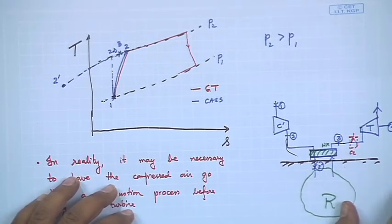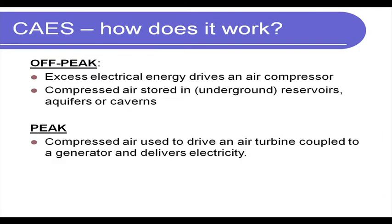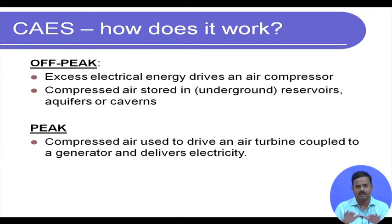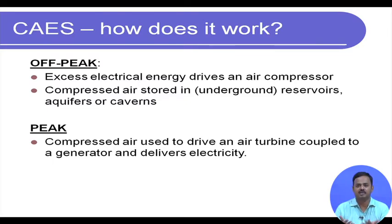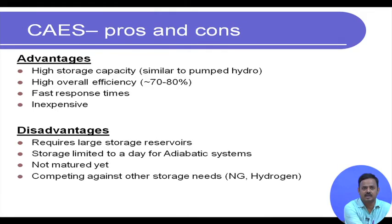To summarize how CAES works: electrical energy during off-peak hours drives an air compressor and the compressed air is stored in underground reservoirs — typically abandoned salt mines are very good candidates. During peak hours, the compressed air drives an air turbine coupled to a generator and generates additional electricity.